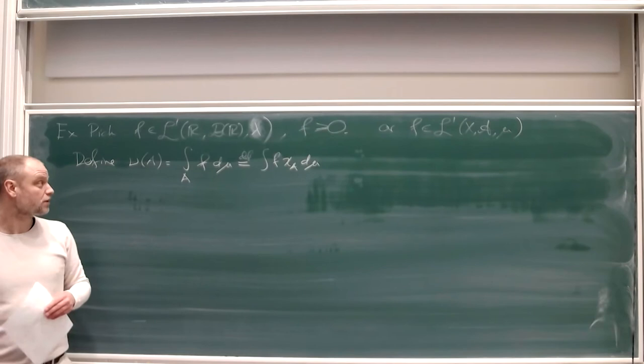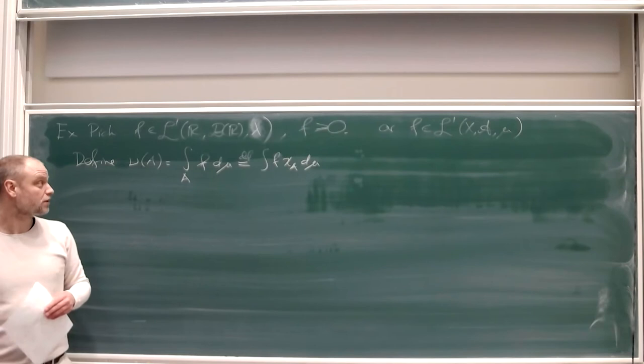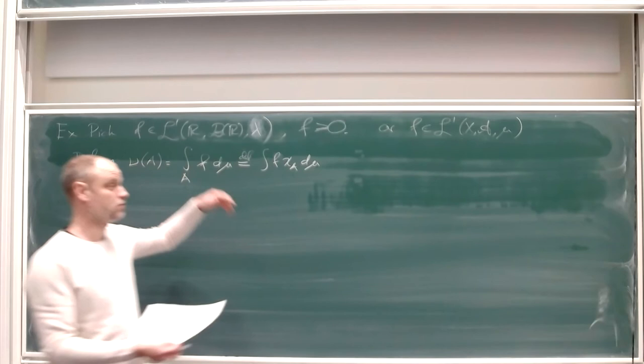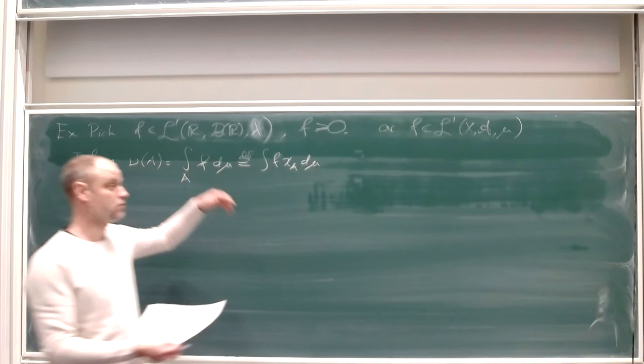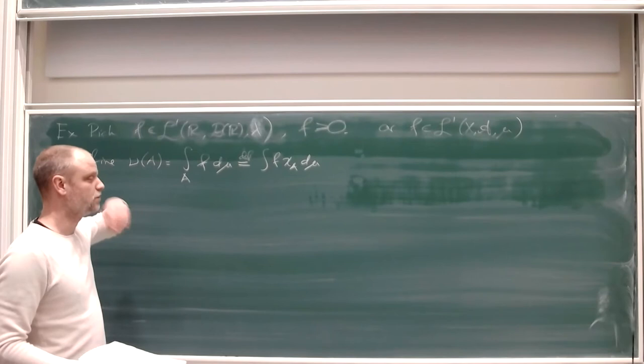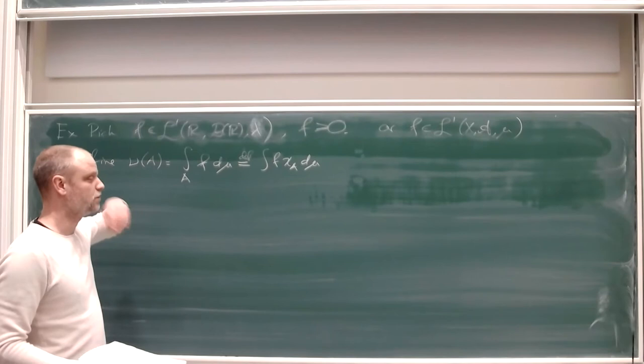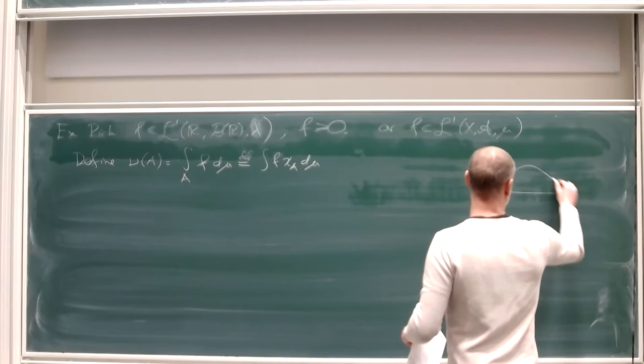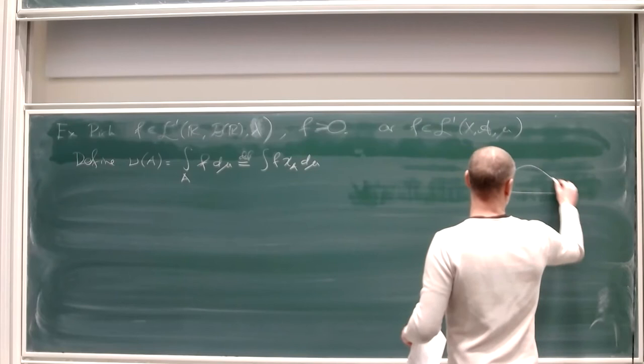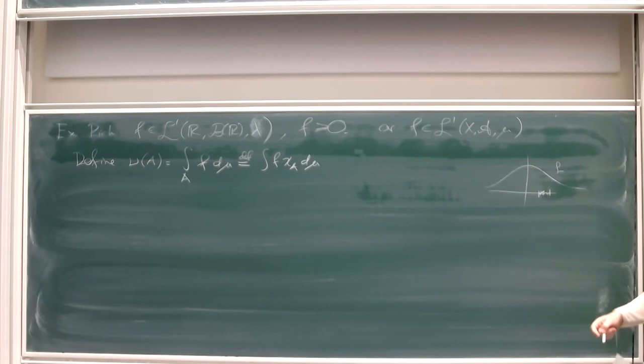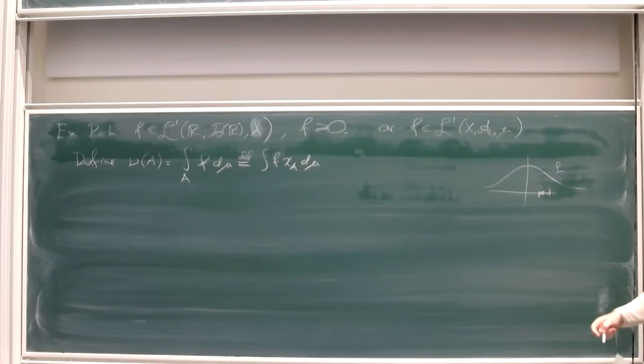The claim is that mu-tilde is a measure on the sigma algebra. In particular, any non-negative integrable function on the real line gives us a new measure — which connects closely with probability theory. If f is a Gaussian density function, then the probability that X lies in some interval is obtained by integrating f, which is the measure mu-tilde of that set.